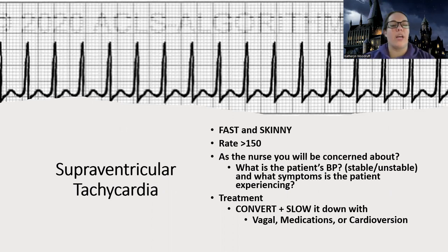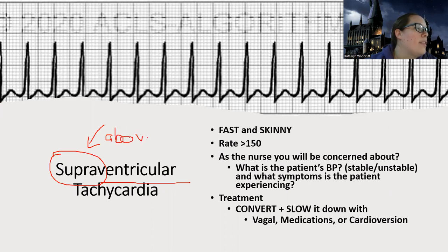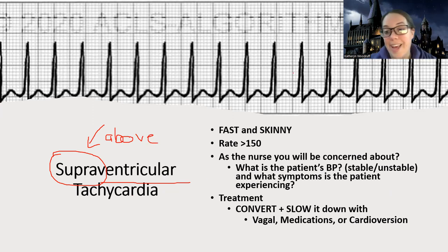Supraventricular tachycardia — it sounds like it's a problem in the ventricles, but it's supraventricular. Supra means above the ventricles. So this is above-the-ventricles tachycardia. What's above the ventricles? The atria. So this is the top-of-the-heart tachycardia.